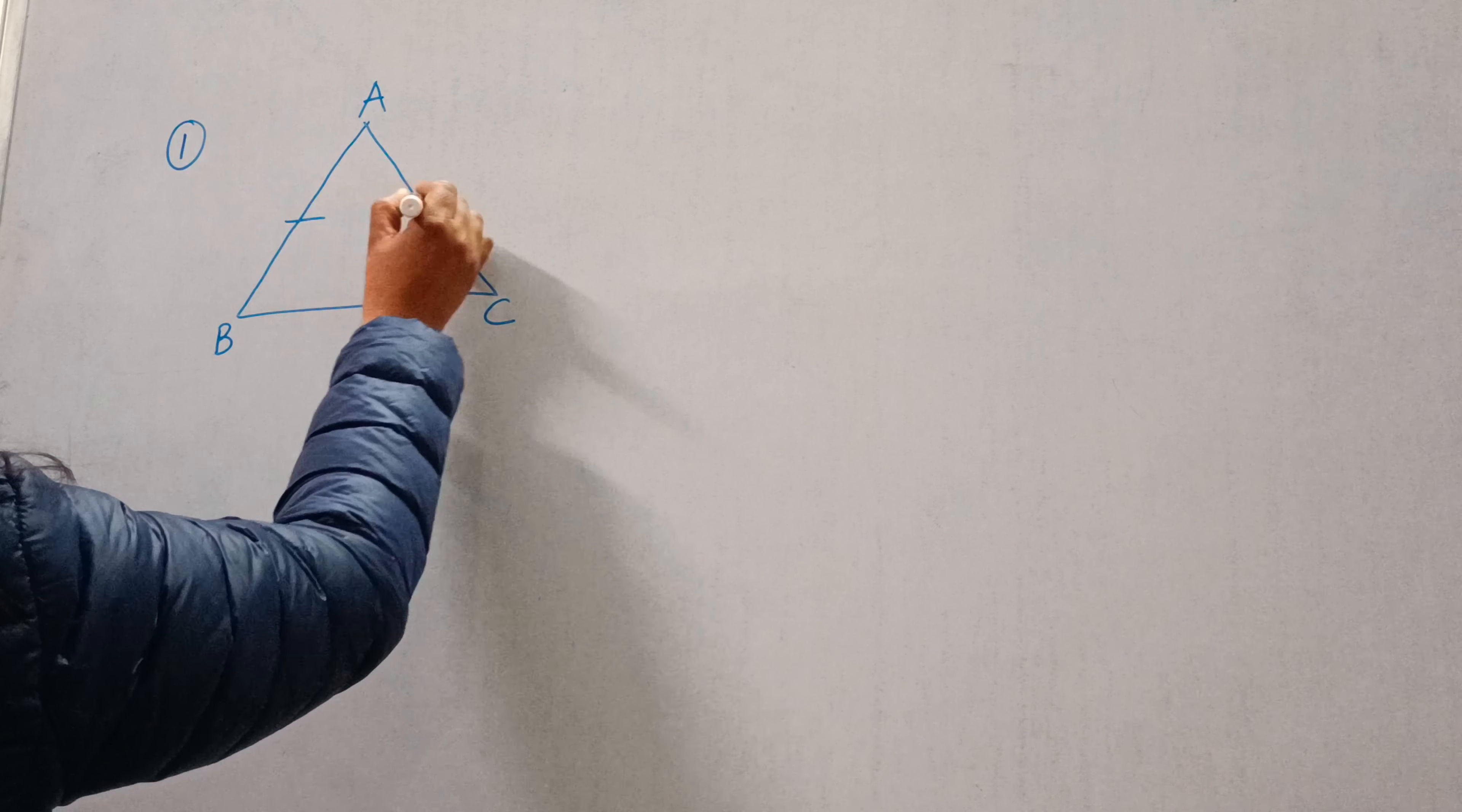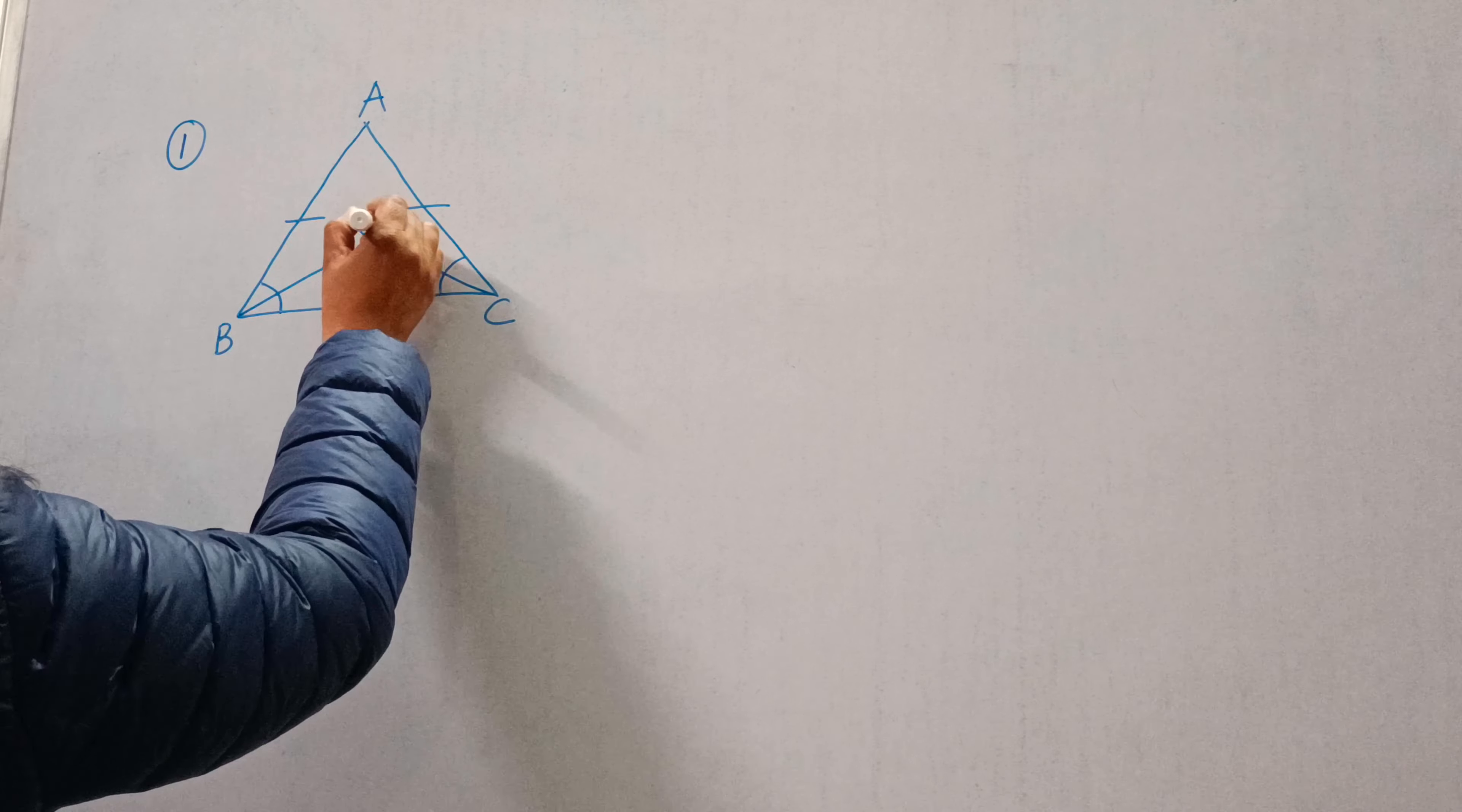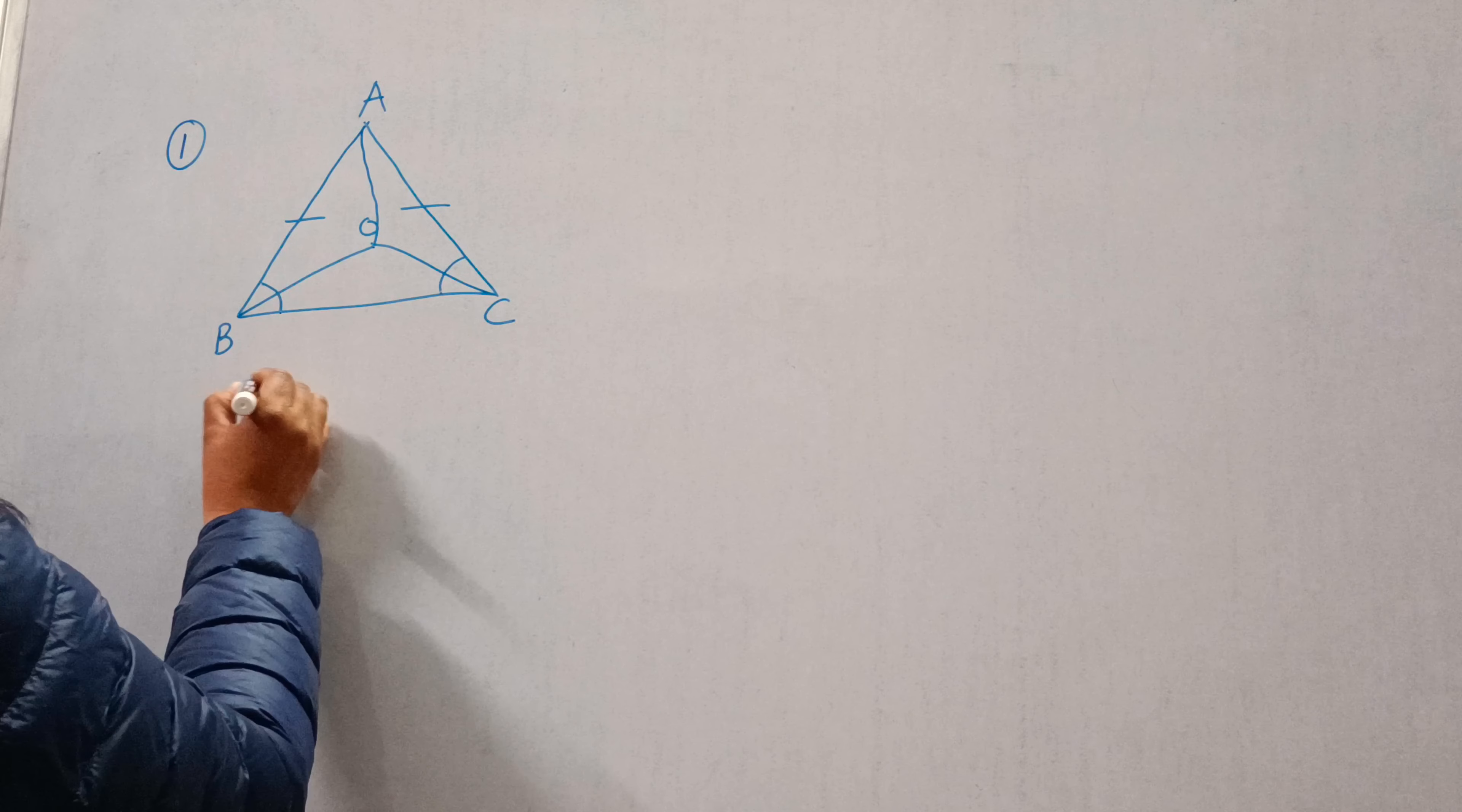AB is equal to AC. The bisector of angle B and angle C intercept each other at O. Join A to O. Show that...